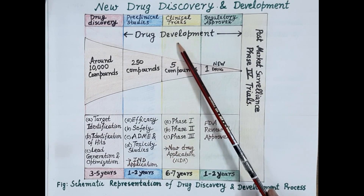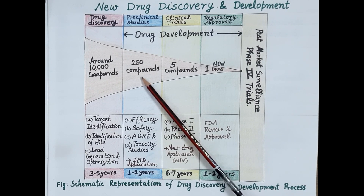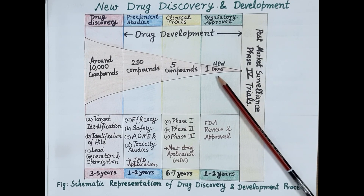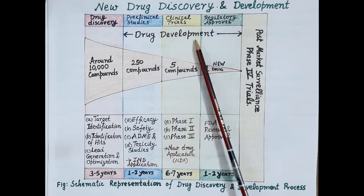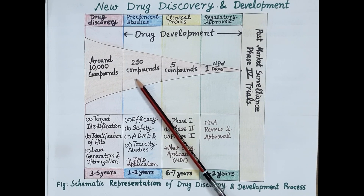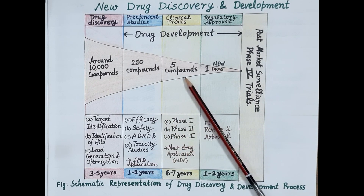The second stage is new drug development, where optimized lead compounds — around 250 compounds — are further screened in animals and human beings to finally identify a safe and effective drug molecule with optimal pharmacokinetic, pharmacodynamic, pharmaceutical, and toxicological properties. Preclinical evaluation is the step where these 250 compounds are tested in animals before trials in humans, and by the end, around five candidates are selected for clinical trials.